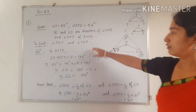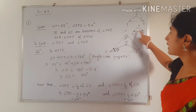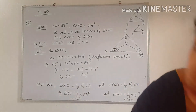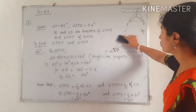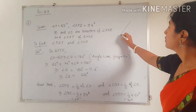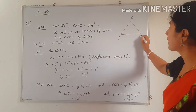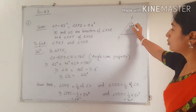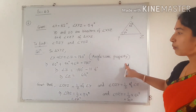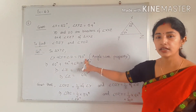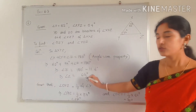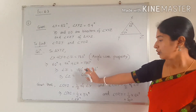We have to find this angle. First I have taken the big triangle. In this triangle, angle X is 62 degrees and angle Y is 54 degrees, and angle Z is not given. By angle sum property, the sum of all angles is 180 degrees. By that way, we can find the value of angle Z, which is 64 degrees. This is very simple — you can easily simplify it.